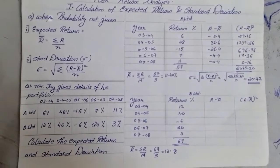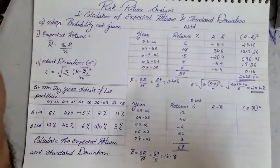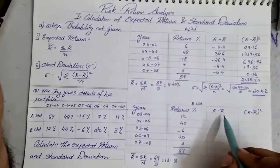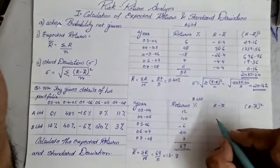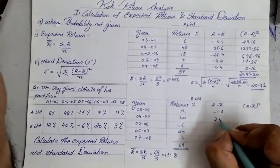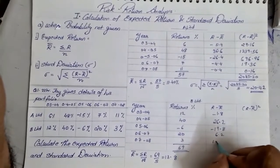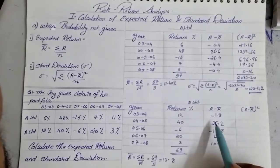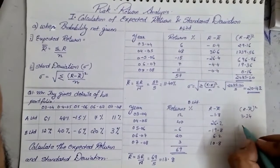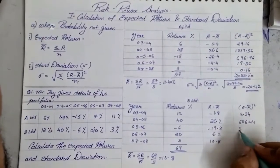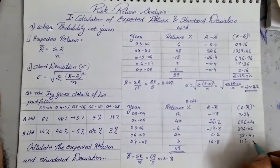Now let us find the value of standard deviation for B Limited. We need to find R minus R-bar. Subtracting 13.8 from each return: 12 minus 13.8 = negative 1.8, next is 26.2, then negative 19.8, then 6.2, and 10.8. Squaring these gives: 3.24, 686.44, 392.04, 38.44, and 116.64.